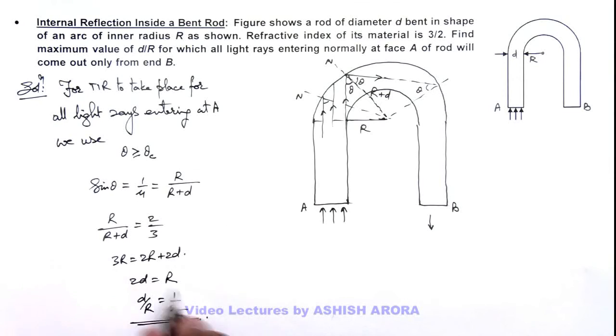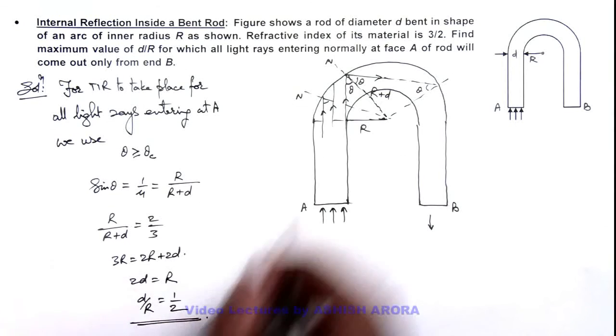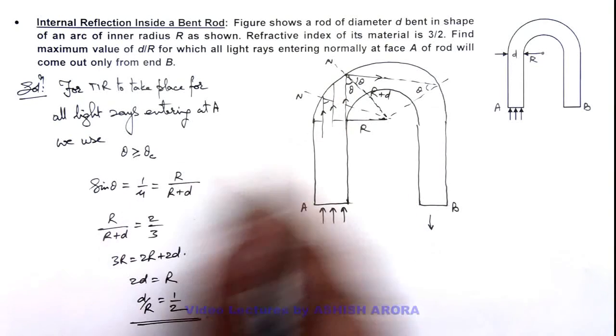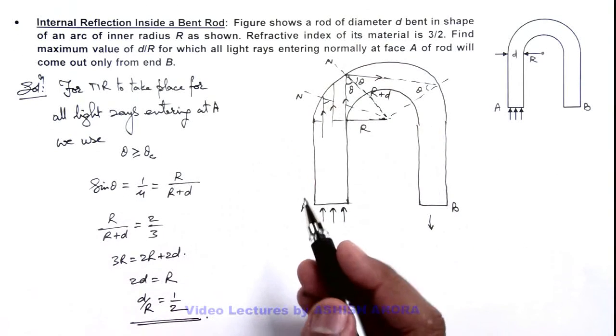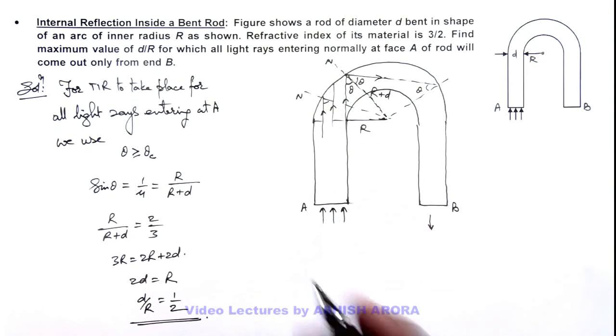So this is the maximum value of d by r. If the value of d by r increases beyond this, the value of angle theta will be less than critical angle and light will be refracted out from the curved surface. So this is the maximum value of d by r and this is the final result of this problem.